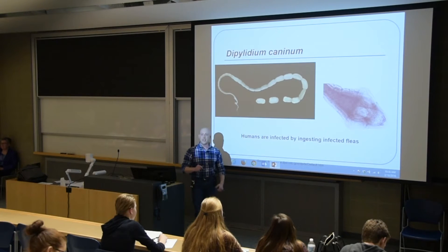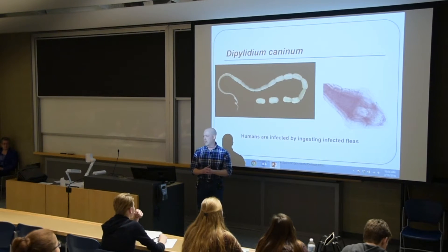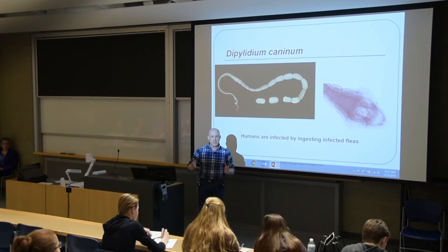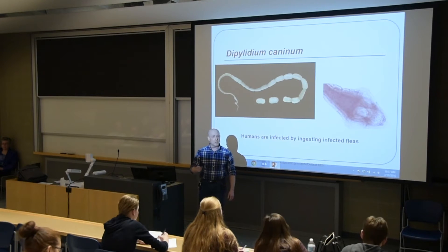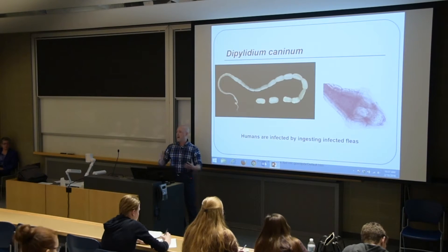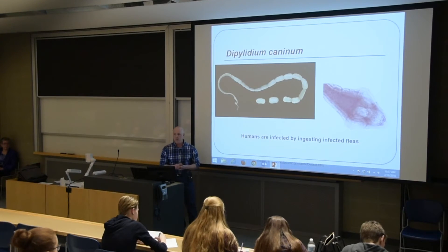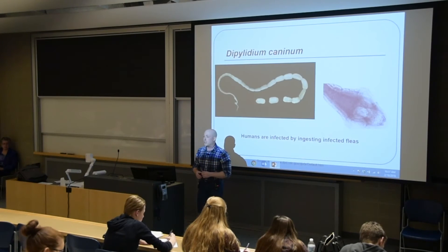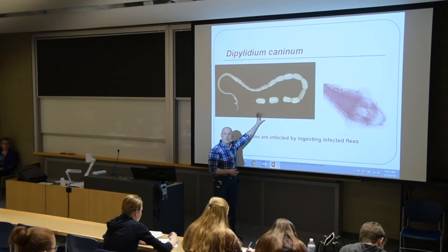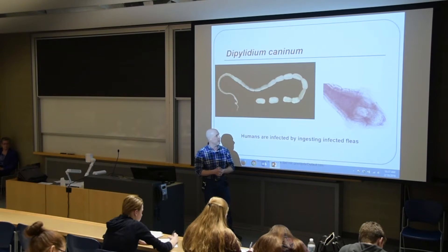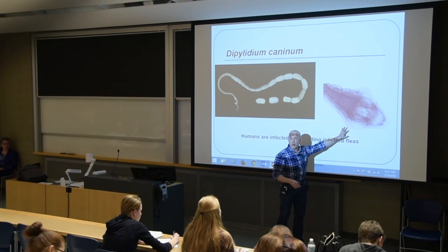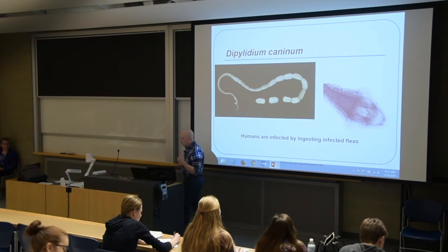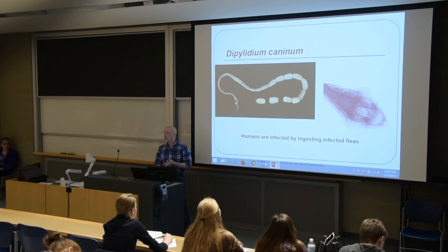Instead of going into a lot of detail, I'll introduce about six parasites and talk a little about life cycles — the fast six, you can call it. This is an image of a tapeworm called Dipylidium caninum — the prototypical parasite that people think of. These sections are called proglottids, which are filled with eggs and used to propagate the parasite life cycle. This is the head region called the scolex, which attaches to the intestine. Humans can become infected with this particular parasite by ingesting infected fleas.